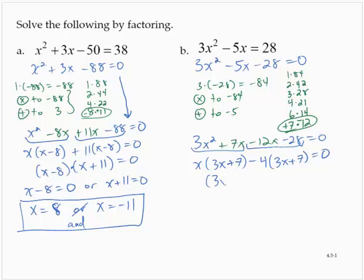So I'd have 3x plus 7 by x minus 4 is 0, setting each factor to 0, 3x plus 7 is 0, x minus 4 is 0.